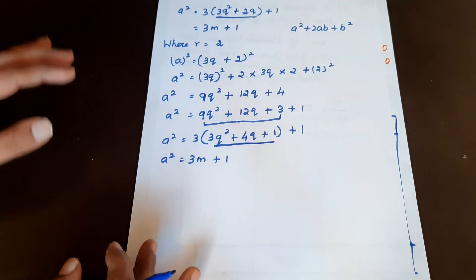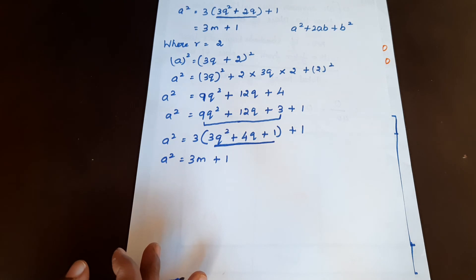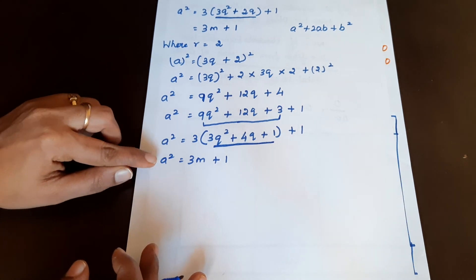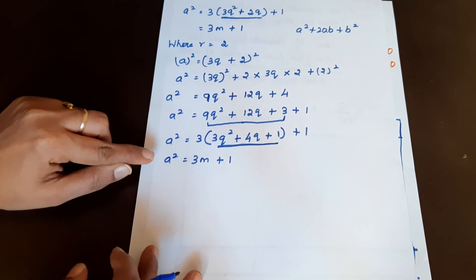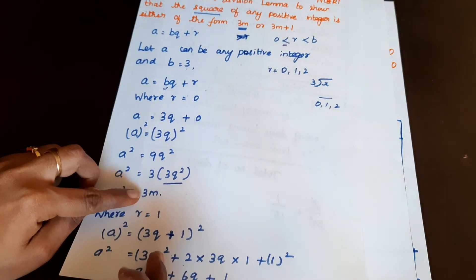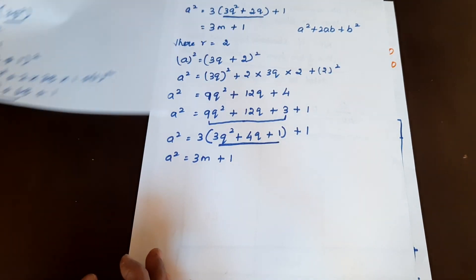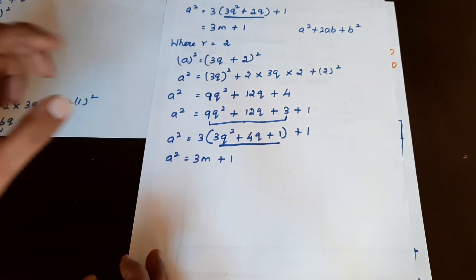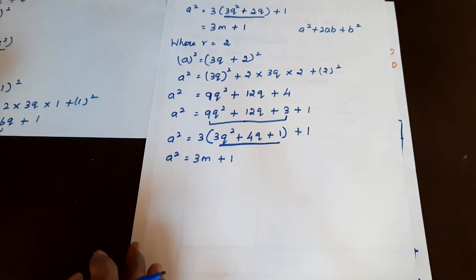So, as shown in the statement, the square of any positive integer a takes the form 3m or 3m + 1. Hence proved.